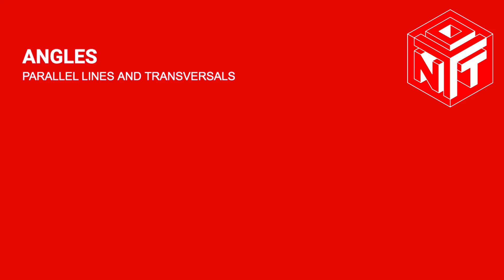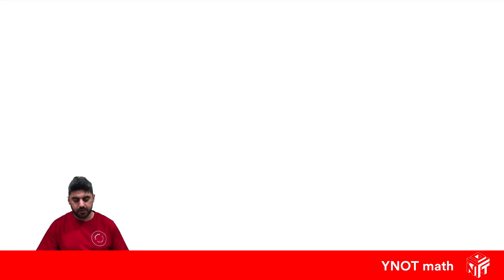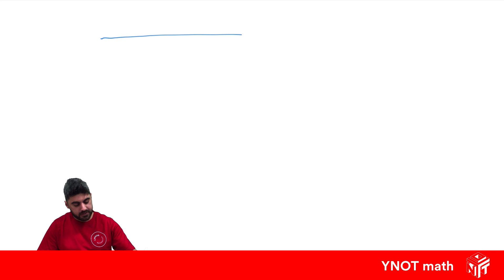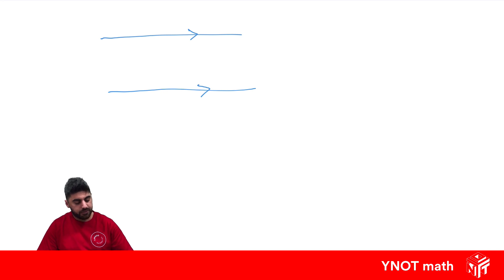Parallel lines and transversals. Parallel lines are lines that never meet — think of train tracks as parallel lines. Here's an example of some parallel lines, and we'll use little arrows to show the lines are parallel. Now if we have a line that goes through two parallel lines, we call that a transversal.